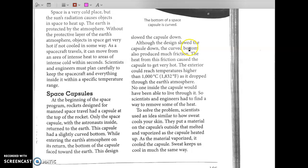Although the design slowed the capsule down, the curved bottom also produced much friction. The heat from this friction caused the capsule to get very hot. The exterior could reach temperatures higher than a thousand degrees Celsius. I don't know about you, but I think that's really interesting. As it dropped through the earth's atmosphere, no one inside the capsule would have been able to live through it. So scientists and engineers had to find a way to remove some of the heat. So we're talking about unwanted heat here, just like we don't want our laptops to get overheated.